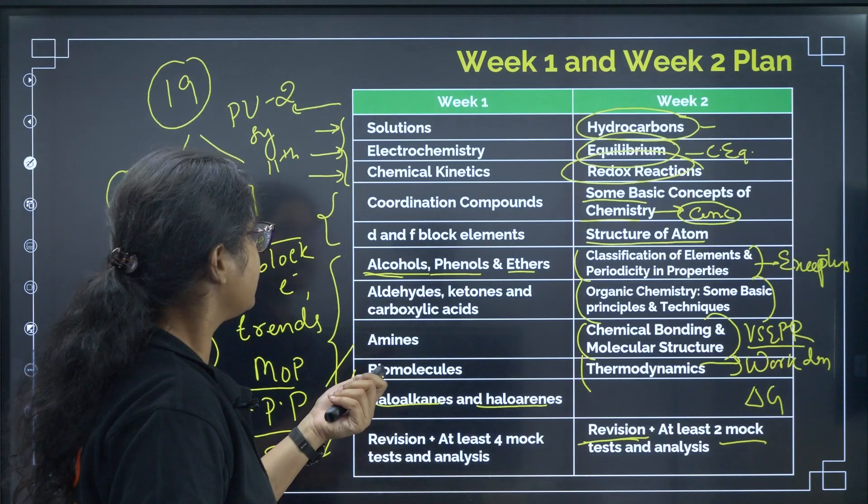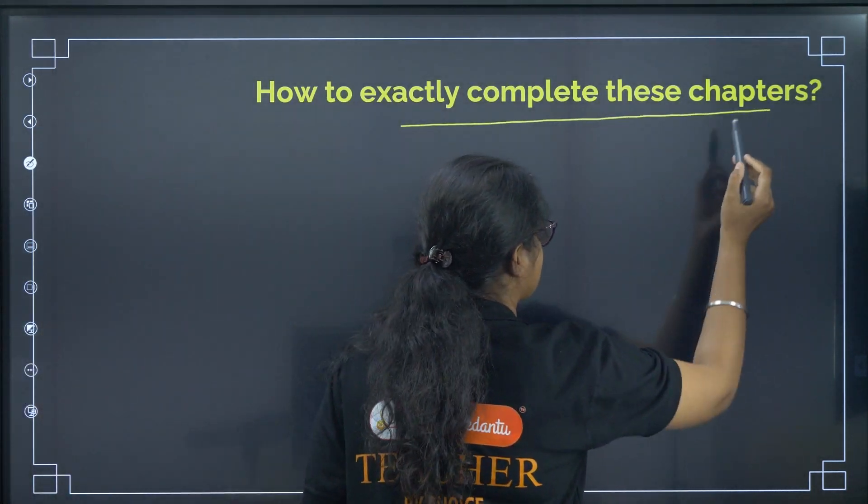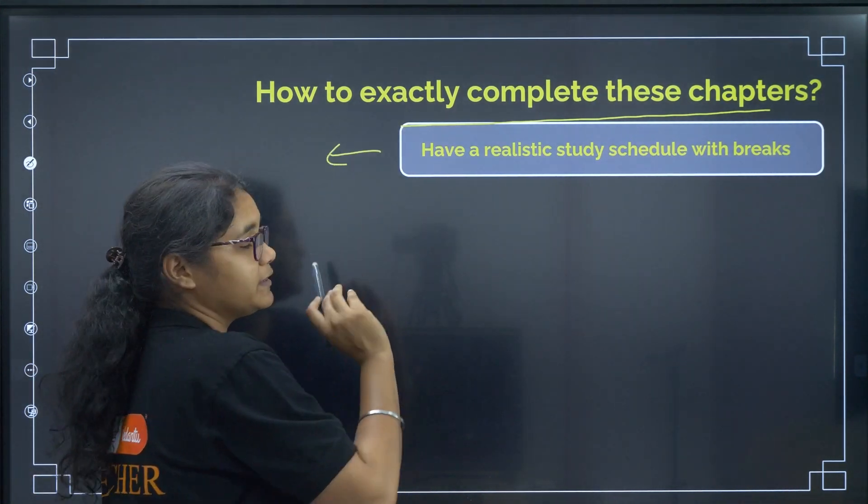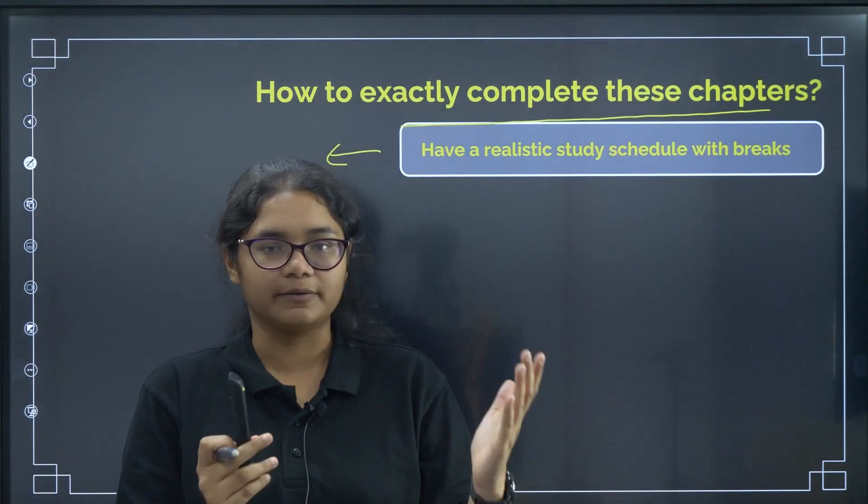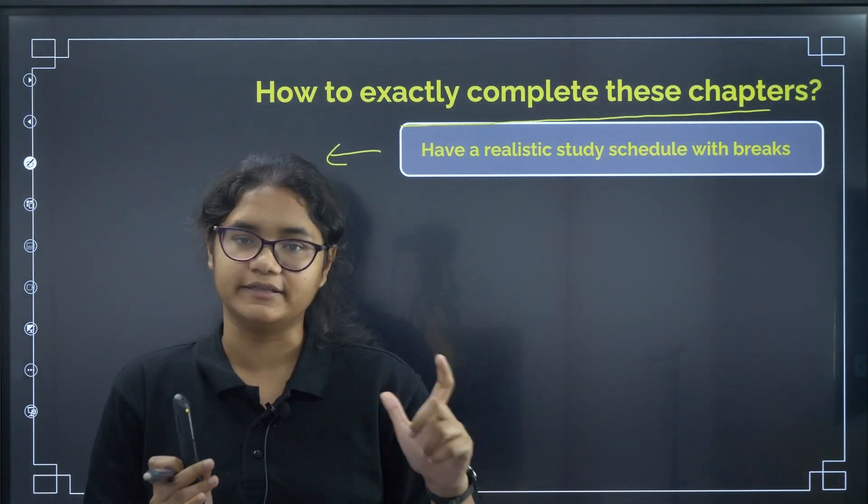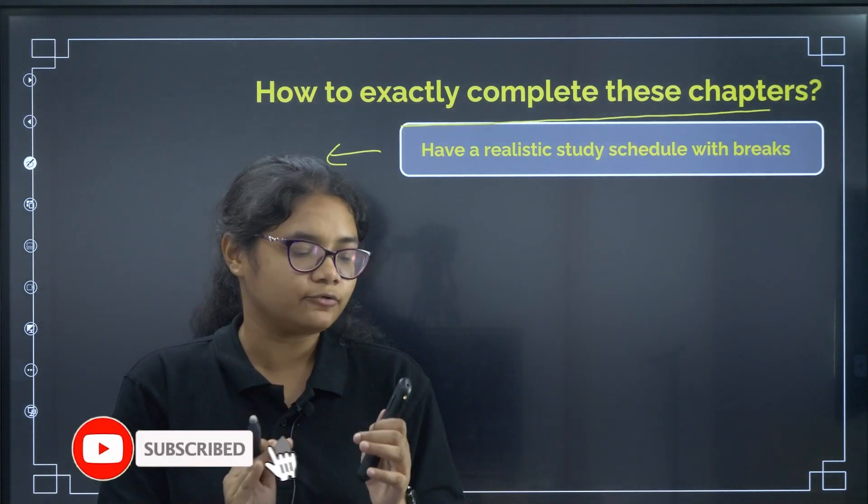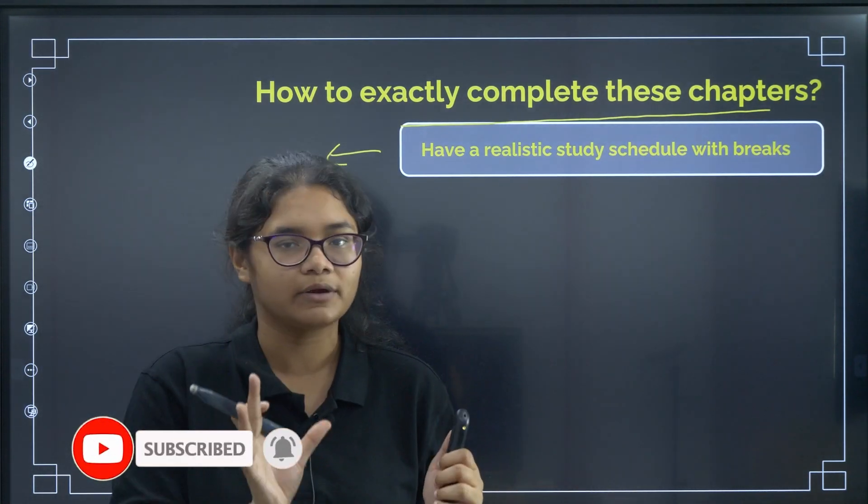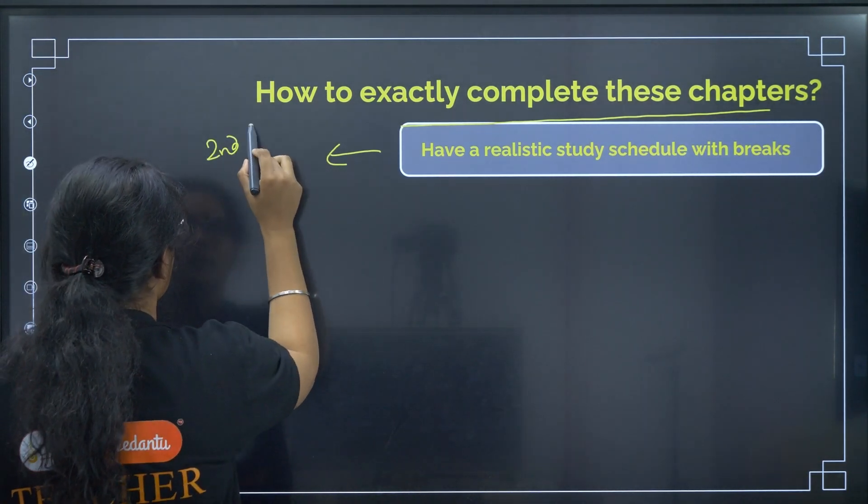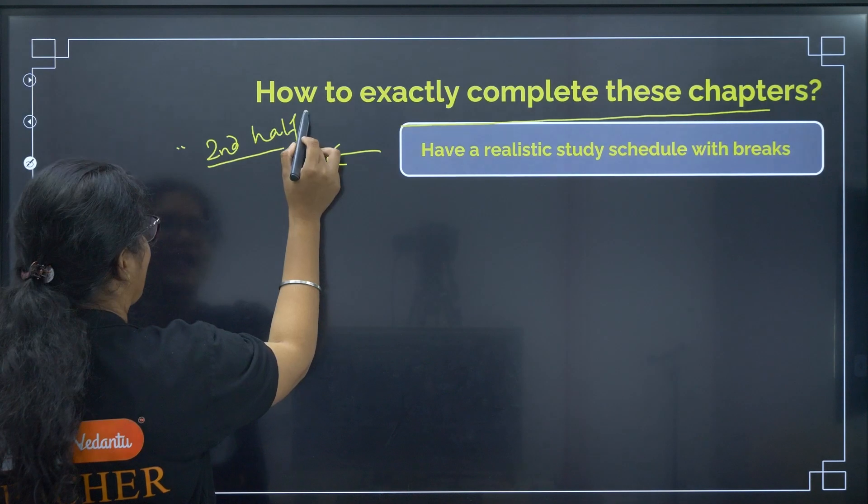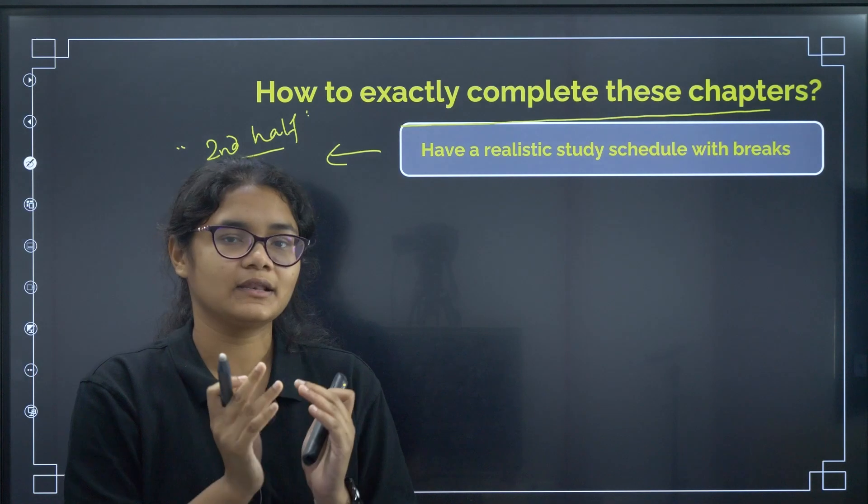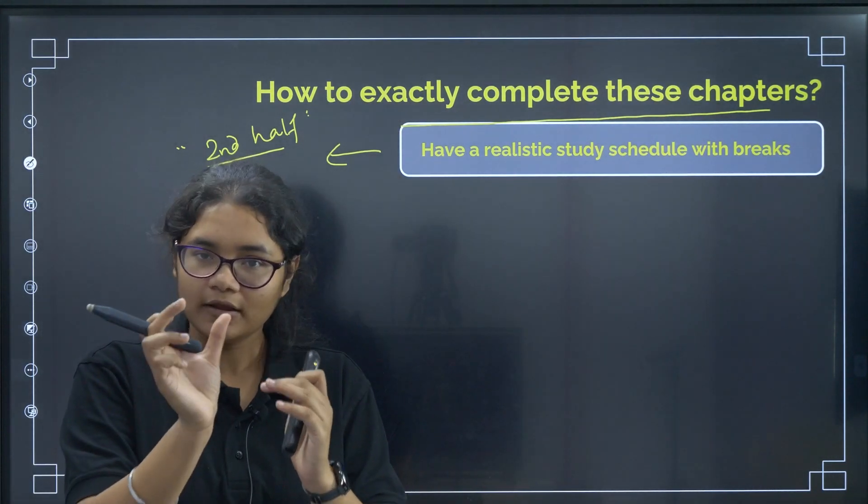Now, let us see how exactly you have to complete these chapters. As I have already told you, first is have a realistic study schedule with breaks. Just you have to do physics, chemistry, maths, all the subjects are there. So, just divide the time equally for all the three subjects or based on your strength and weakness. In that, you have to first plan chemistry where you are studying, which time slot you are taking for chemistry. If your exam, you see chemistry exam is in the second half. So, it is better if you keep yourself active in this time. Use this time to study chemistry so that your brain is activated, it can perform better in that time. Your body is habituated for that time slot.